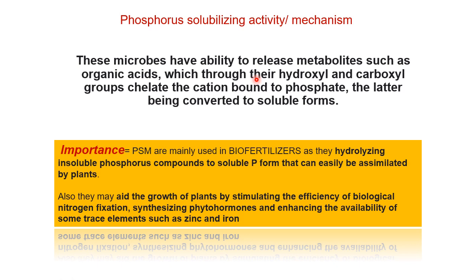What is the importance of PSM — phosphate solubilizing microbes? They are mainly used in biofertilizers as they hydrolyze insoluble phosphorus to the soluble form. They may also aid in the growth of plants by stimulating the efficiency of biological nitrogen fixation, synthesizing phytohormones — also termed as growth promoting hormones — and enhancing the availability of trace elements such as zinc and iron.